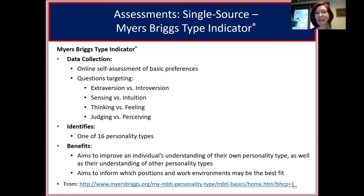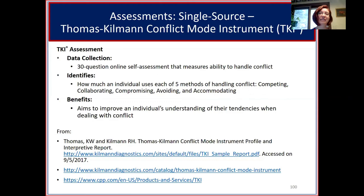The TKI assessment has about 30 online questions and helps identify one's ability to handle conflict, looking at five methods: competing, collaborating, compromising, avoiding, and accommodating. The aim is to improve an individual's understanding of their tendencies when dealing with conflict.